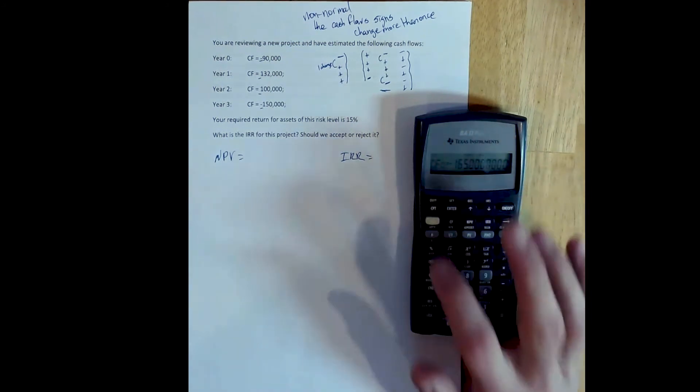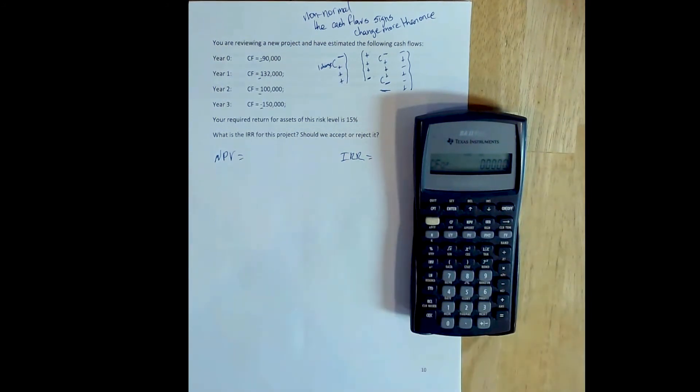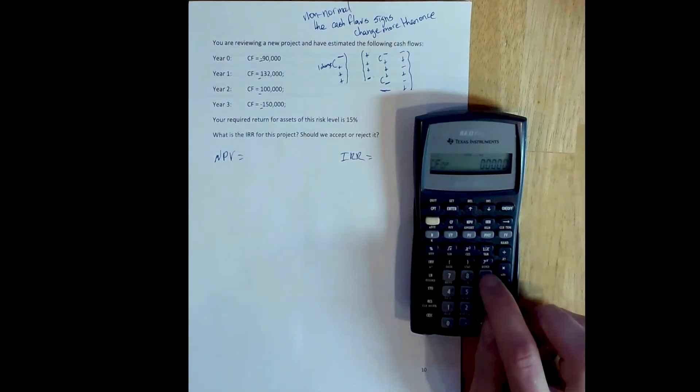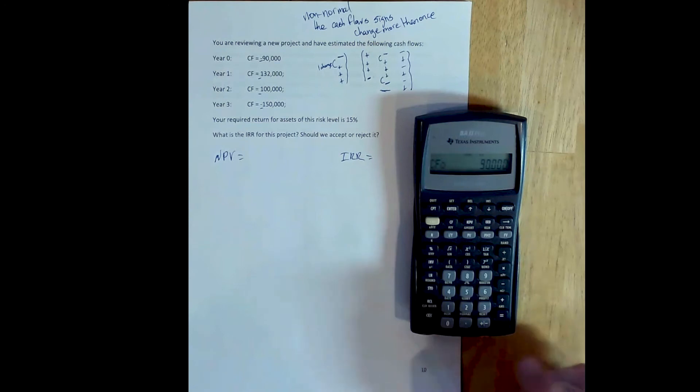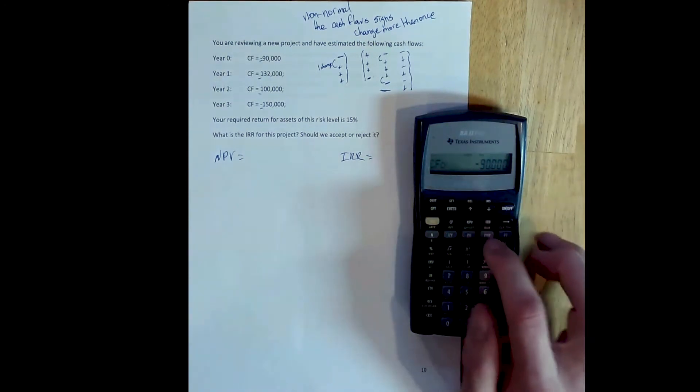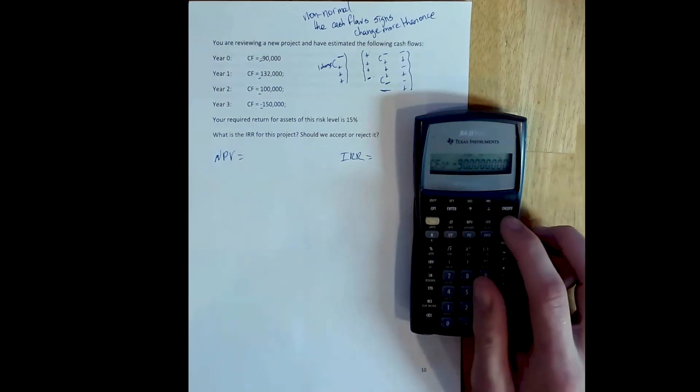We go into the cash flow environment. We need to clear our previous work, so we press second and clear. The initial cash flow is the initial cost of the project, and here that's $90,000. And it's a cost, so it's a negative cash flow, it's a cash outflow. We set that value with the enter button.